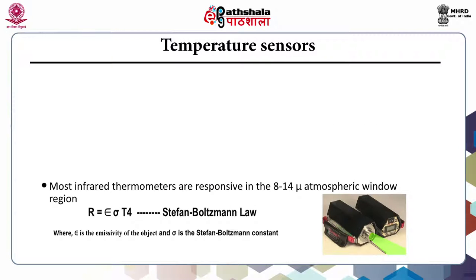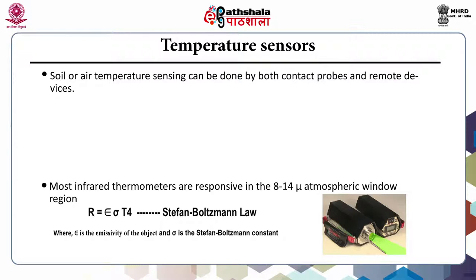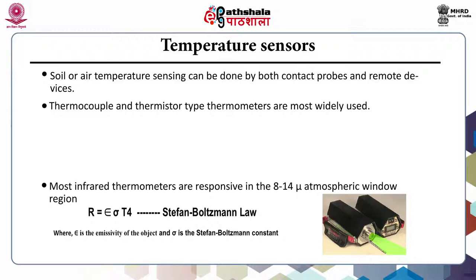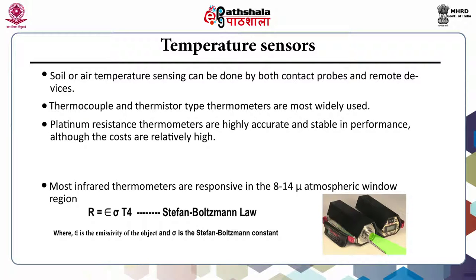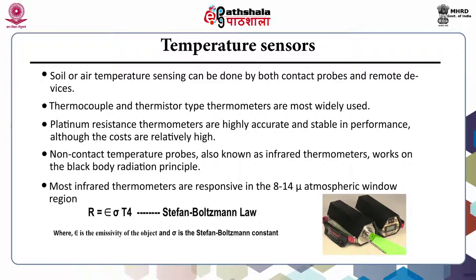Next comes temperature sensors. Soil or air temperature sensing can be done by both contact probes and remote devices. Thermocouple and thermistor type thermometers are most widely used. Platinum resistance thermometers are highly accurate and give stable performance, however the cost is also high. In case of non-contact temperature probes, there are infrared thermometers. It works on the blackbody radiation principle governed by the Stefan-Boltzmann law, where radiant energy R emitted by an object is proportional to the fourth power of its temperature T. Most infrared thermometers are responsive in the 8 to 14 micrometer atmospheric window region.